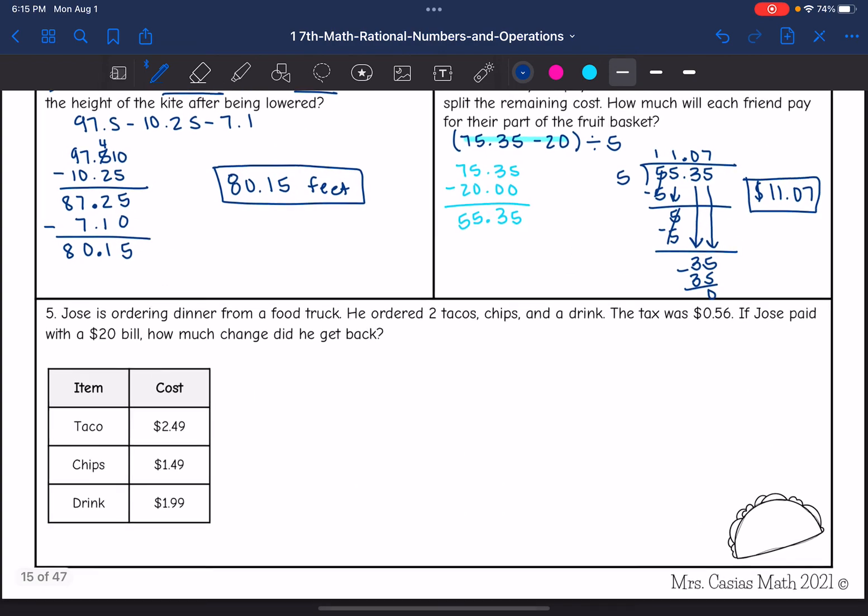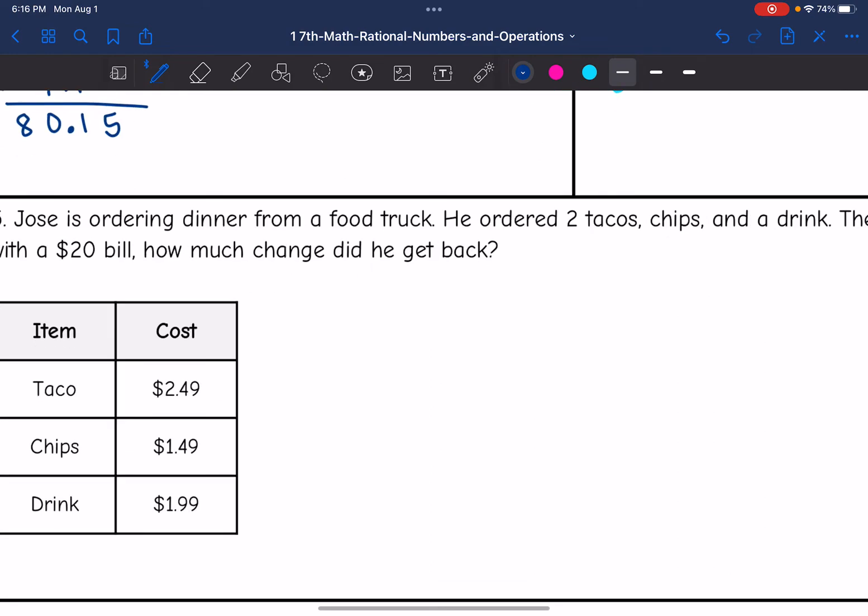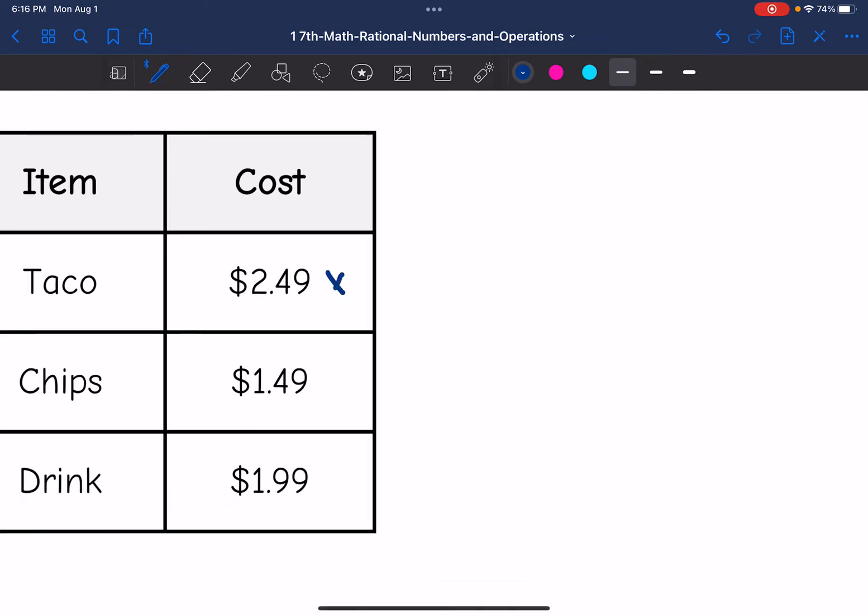Let's look at number 5. Jose is ordering dinner from a food truck. He orders 2 tacos, chips, and a drink. The tax was 56 cents. If Jose paid with a $20 bill, how much change did he get back? So the first thing that I want to determine is the total that Jose paid. Tacos were $2.49, chips were $1.49, and drink was $1.99. He did chips and a drink and 2 tacos. So let's figure out what 2 tacos is first.